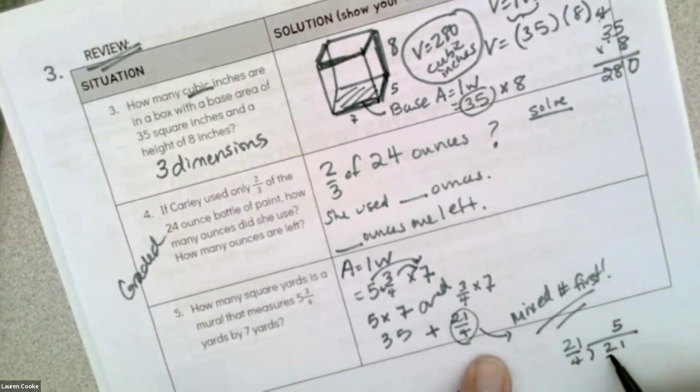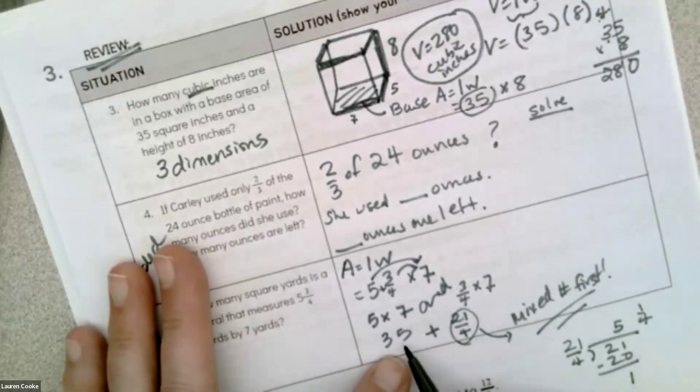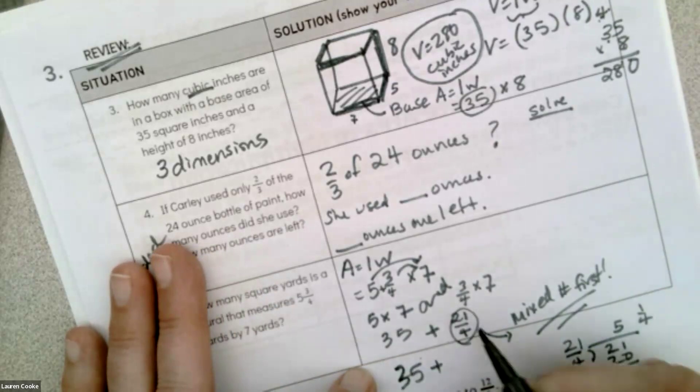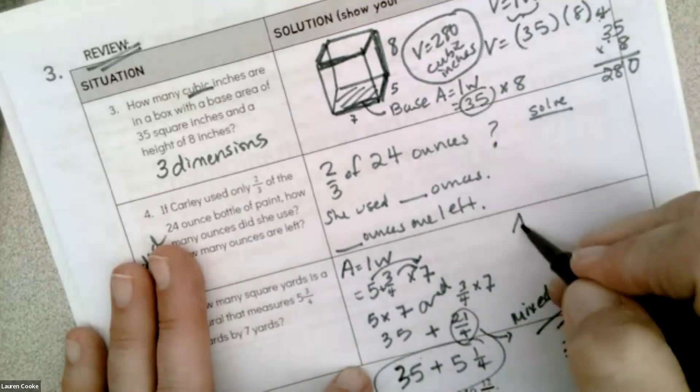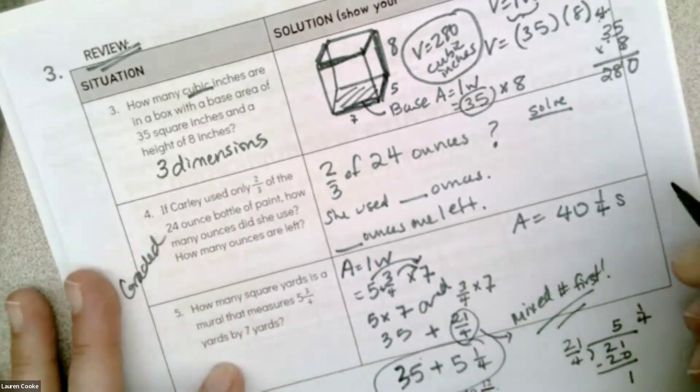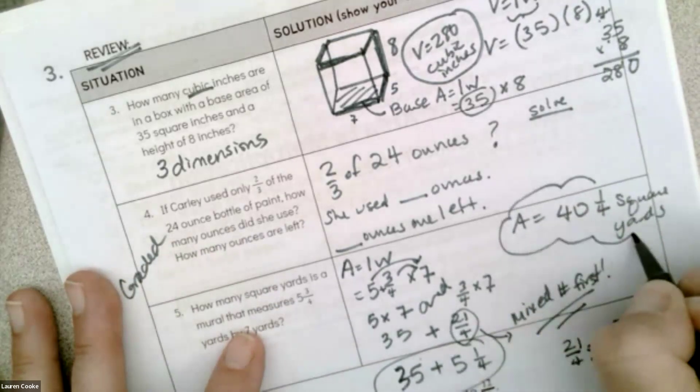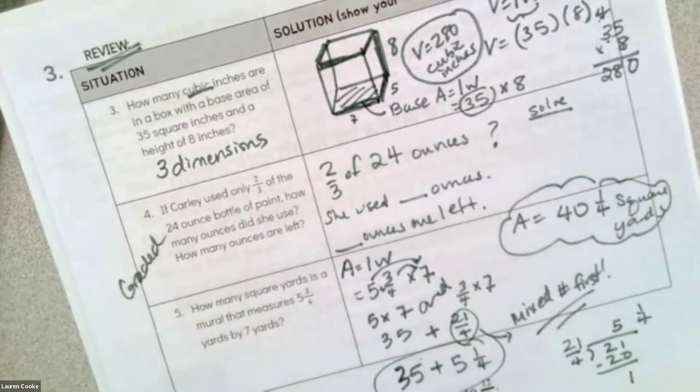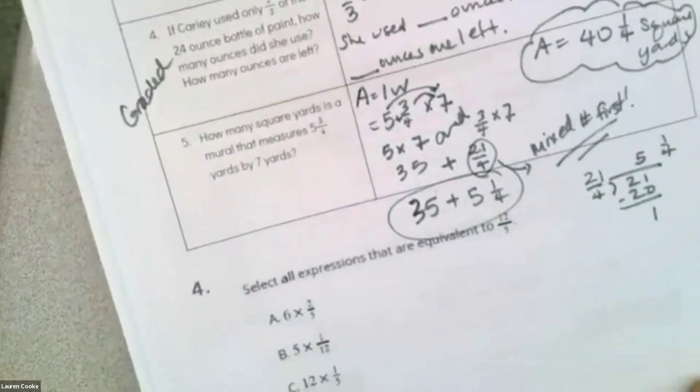I'm going to have 21 divided by 4. I have 1 left over out of 4, so now because this was 35 plus 21 over 4, I'm going to have 35 plus 5 and 1/4. I can do 35 plus 5 is 40 and 1/4 square yards, and I need to have my units. I should see that on your paper.